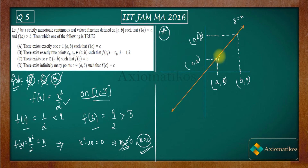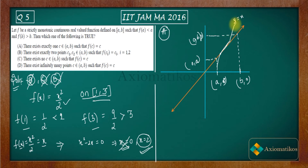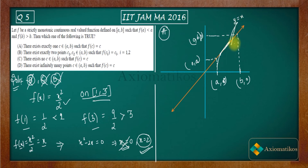The function goes up like this, then coincides with the line y = x from one point to another, then goes sharply upward. So the curve goes up, coincides with y = x over an interval, then rises steeply — it's a bit difficult to draw on the computer.